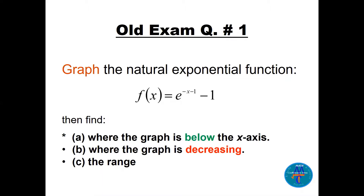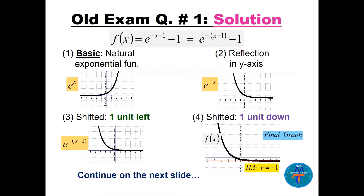We need to find where the graph is below the X-axis, where it is decreasing, and find the range. First, rearrange the function — on the power we have minus x minus one. Take minus as a common factor so the coefficient of x becomes positive one. If we have x plus one that's a shift left; x minus 1 is a shift right. The minus sign indicates a reflection.